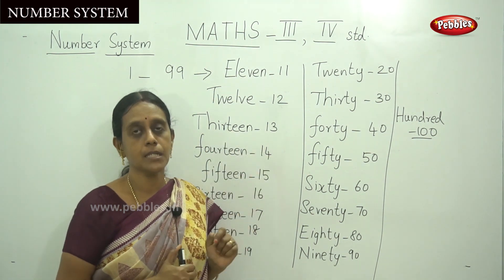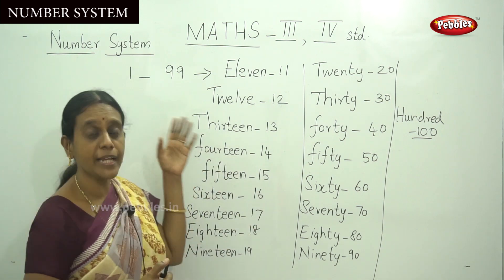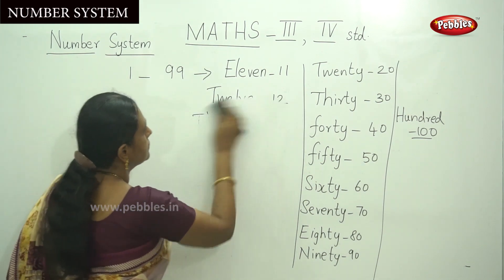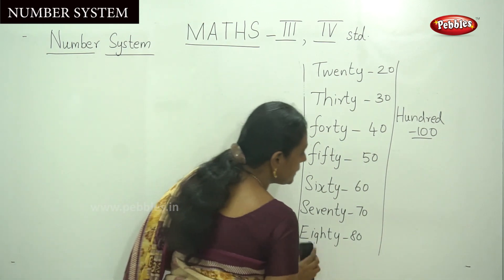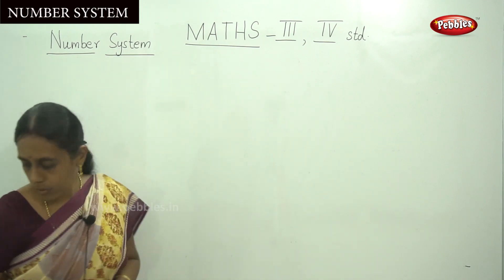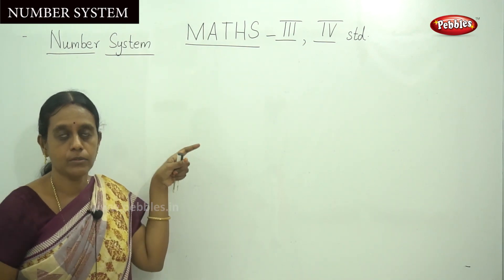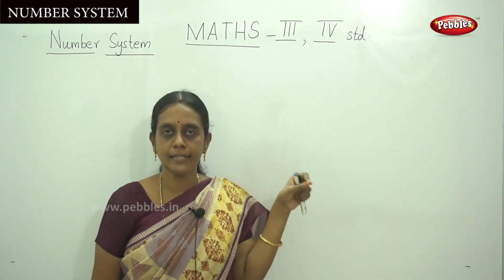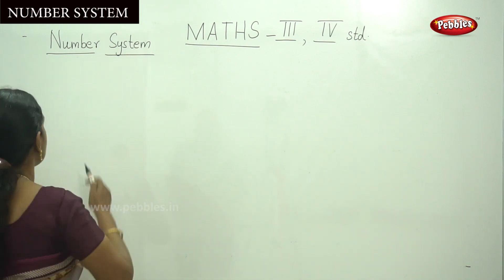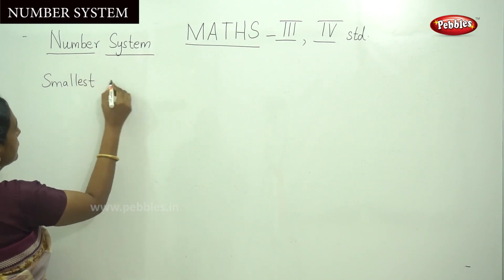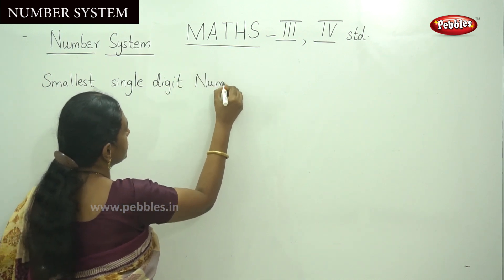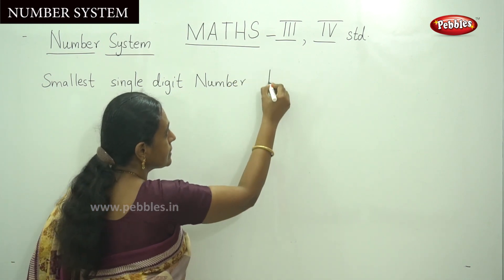Write the numerals with number names — it's very important for reading and writing number names. We move on to where two-digit numbers end and three-digit numbers start. From 1 to 99, while writing numbers from 1 to 99, that is the smallest single-digit number — listen here — the smallest single-digit number is 1.